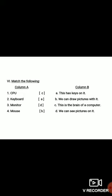Number 2, Keyboard — the answer is A: 'This has keys on it.' Number 3, Monitor — the answer is D: 'We can see pictures on it.' Number 4, Mouse — the answer is B: 'We can draw pictures with it.'